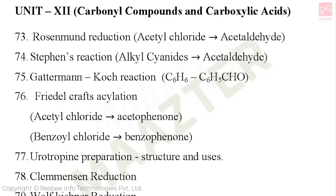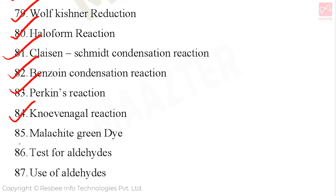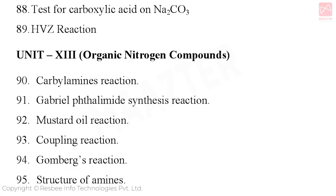Unit 12: Carbonyl Compounds and Carboxylic Acid. Naming reactions are very important. Topics include: Urotropin preparation, structure, and uses; Rosenmund reduction reaction; Stephen's reaction; Gattermann-Koch reaction; Friedel-Crafts acylation reaction; Clemmensen reduction reaction; Wolf-Kishner reduction reaction; Haloform reaction; Claisen-Schmidt condensation reaction; Benzoin condensation reaction; Perkin's reaction; Knoevenagel reaction; Malachite Green dye test; test for aldehydes; uses of aldehydes; test for carboxylic acid with Na₂CO₃; and HVZ reaction. This unit is very important for 2-mark and 3-mark questions.